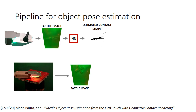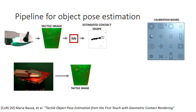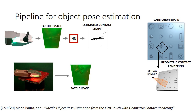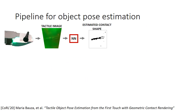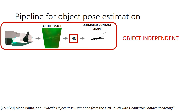Moreover, because we have access to the board that the sensor is contacting, and we also have access to the pose between the sensor and the board, we can render what is the contact shape that the board is producing on the sensor. With these pairs of tactile images and contact shapes, we build a training dataset that we can use to learn our neural network. We have a way to go from tactile images to estimated contact shapes, which is object-independent, because contact shape does not depend on the type of object contacting the sensor.